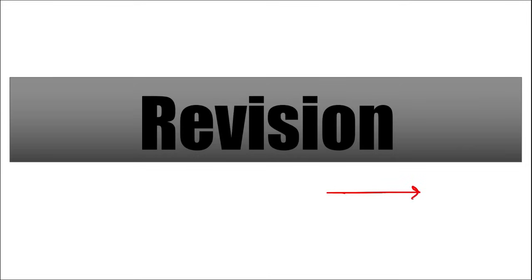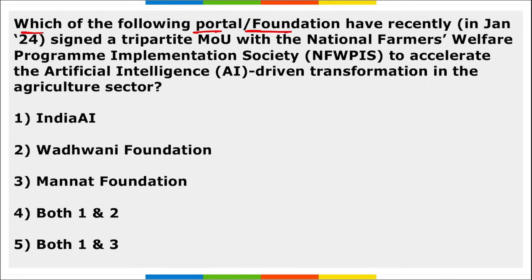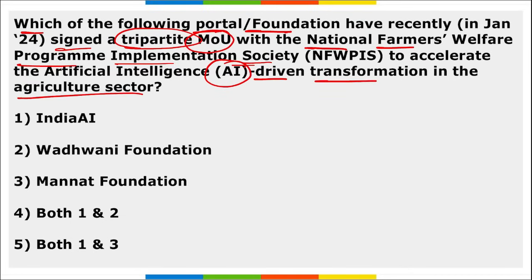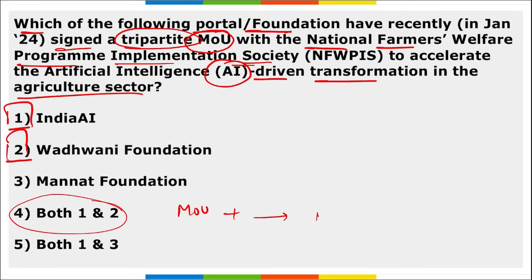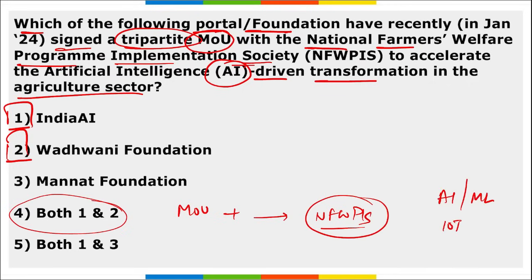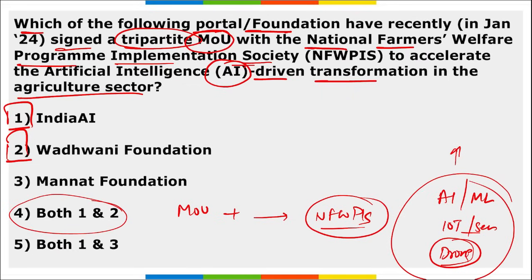In revision: India AI and Wadhwani Foundation recently signed a tripartite MOU with National Farmers Welfare Program Implementation Society (NFWPIS) to accelerate AI-driven transformation in the agriculture sector, including machine learning, IoT devices, sensor-based learning, and use of drones for spraying.